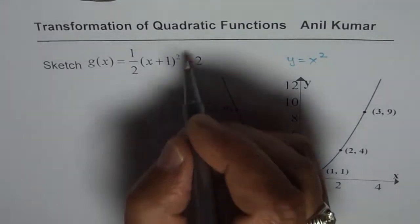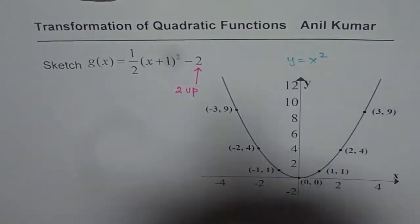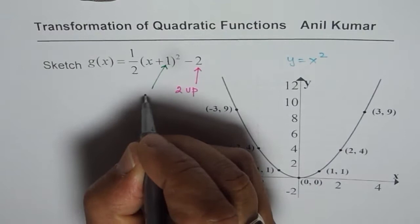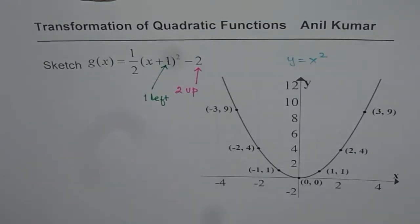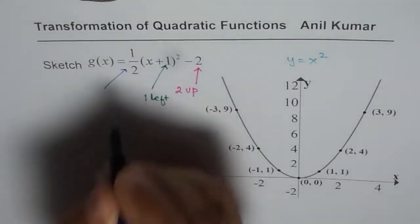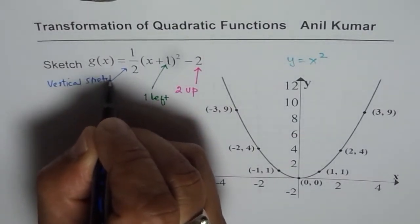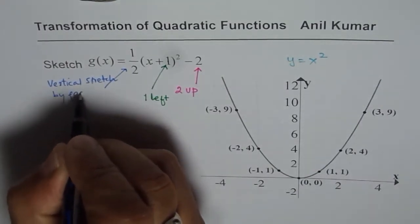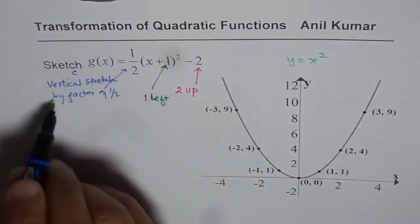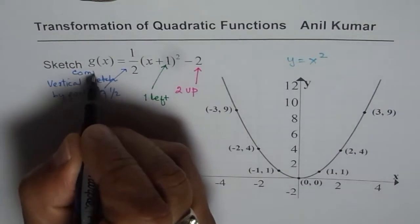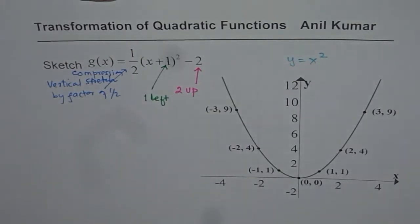So we could write this as 2 units down, 1 unit left, and vertical compression by a factor of 1/2. These are the steps involved.